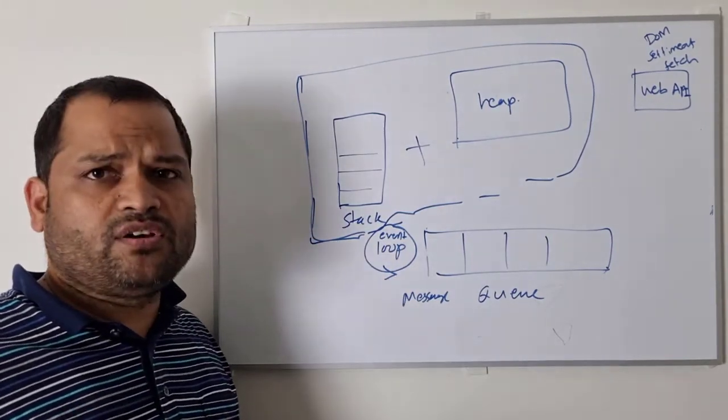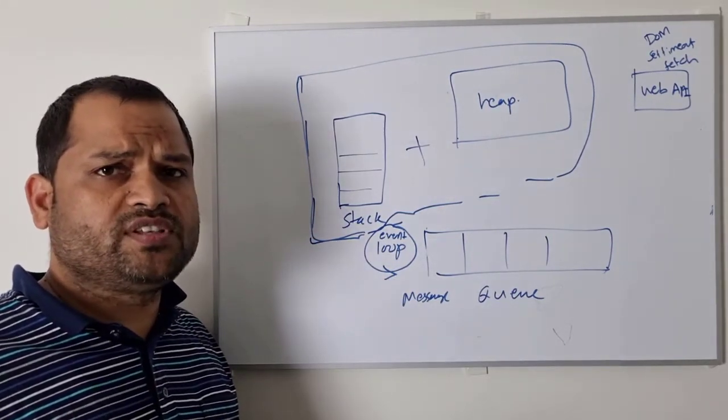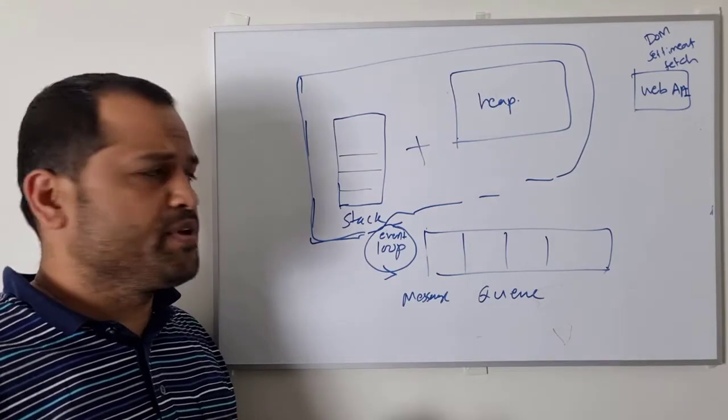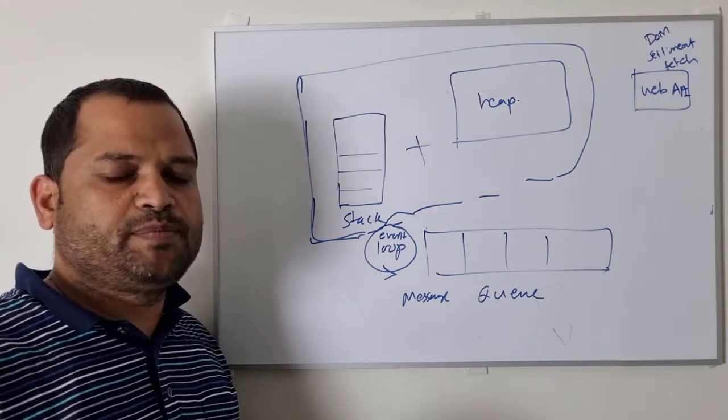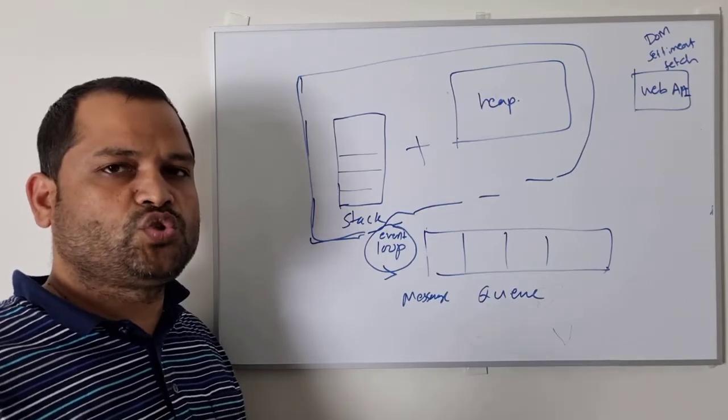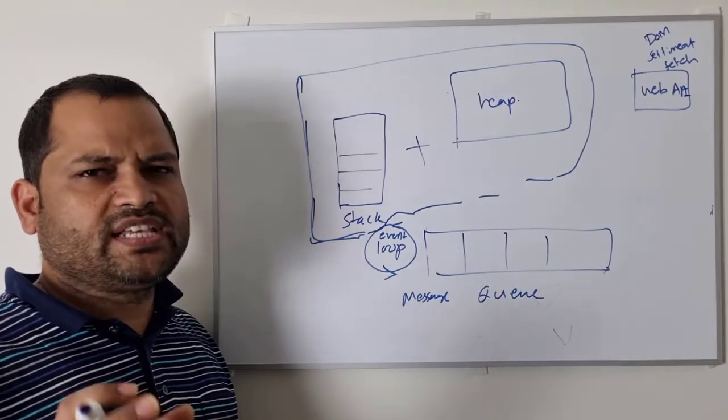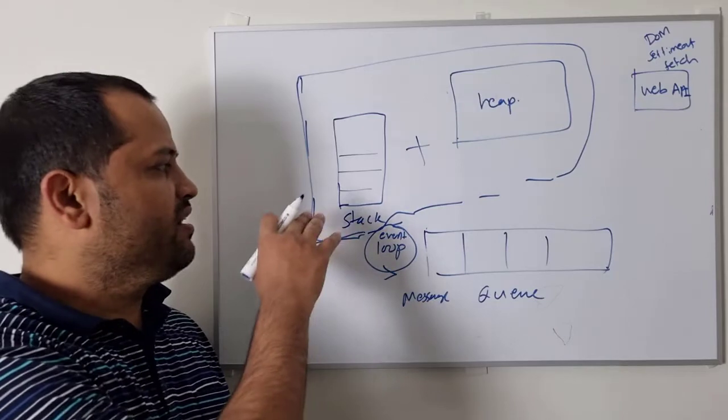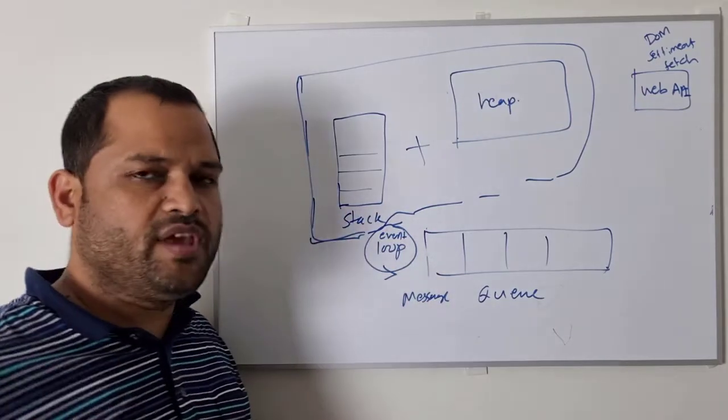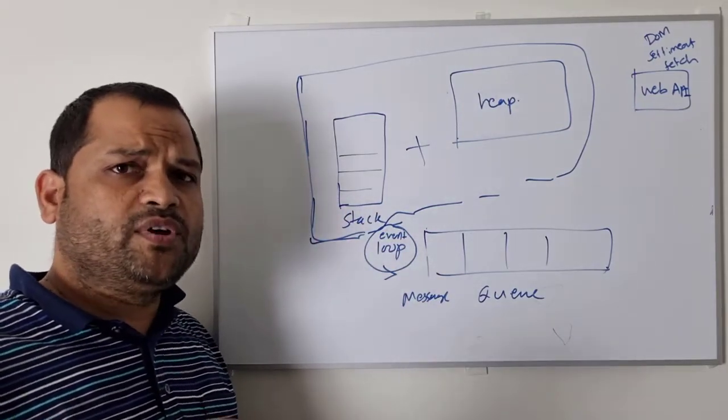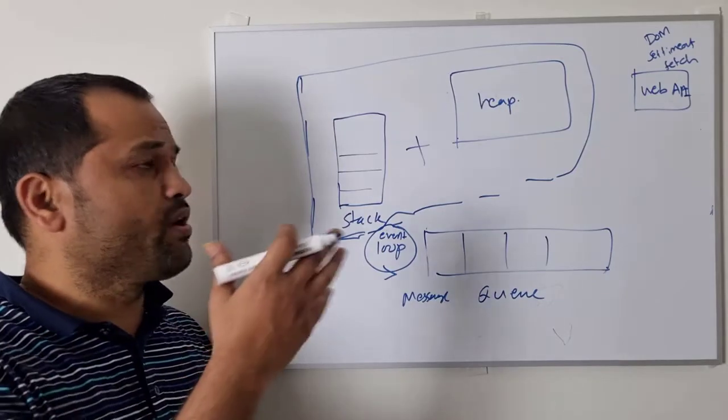The memory requirement of objects is always very high as compared to the primitives. But in case of stack, we know exactly how much memory space we are going to need. Say for example, you want to store number 50, then we know exactly how much space we will need. And then it will be stored in the stack. The main reason why we are storing it in the stack is because it is much faster than storing it on the heap.